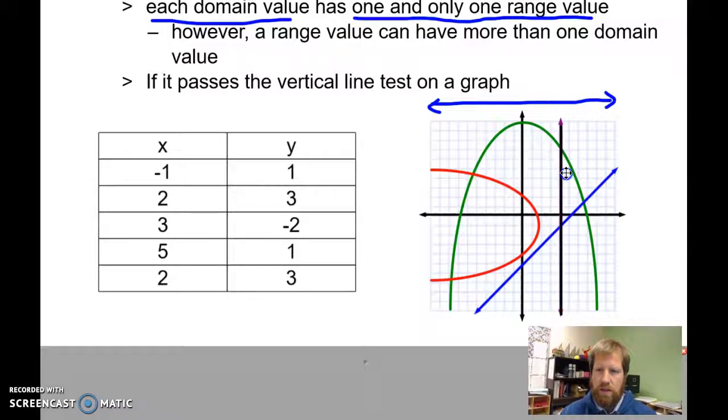It does, however, cross my purple graph, my purple line, in every place. So that one would not be a function. A vertical line is not a function. A horizontal line is, but a vertical line is not.